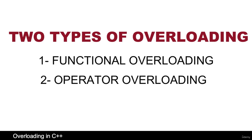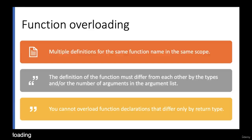Let's discuss function overloading first. Suppose you want to create a function where the same function name has different behaviors. For example, you can use a function called 'add' to add two numbers, or to concatenate two strings into a new string. The function name is 'add' in both cases because it's doing addition, but with different types. That's function overloading — same function name, multiple definitions.